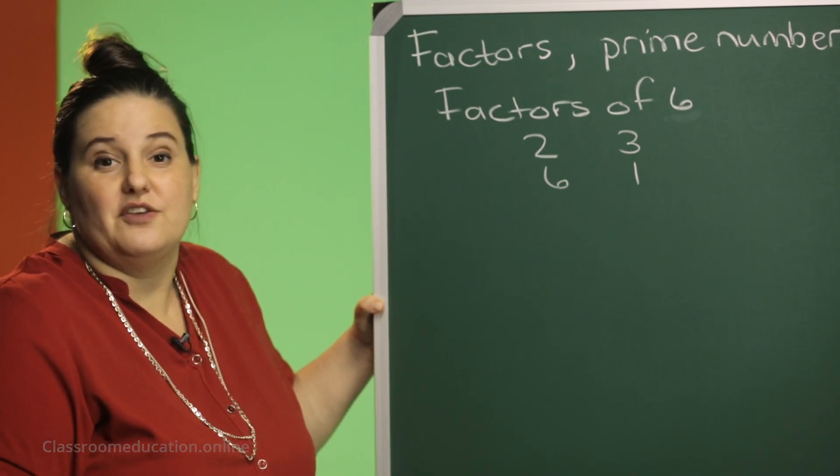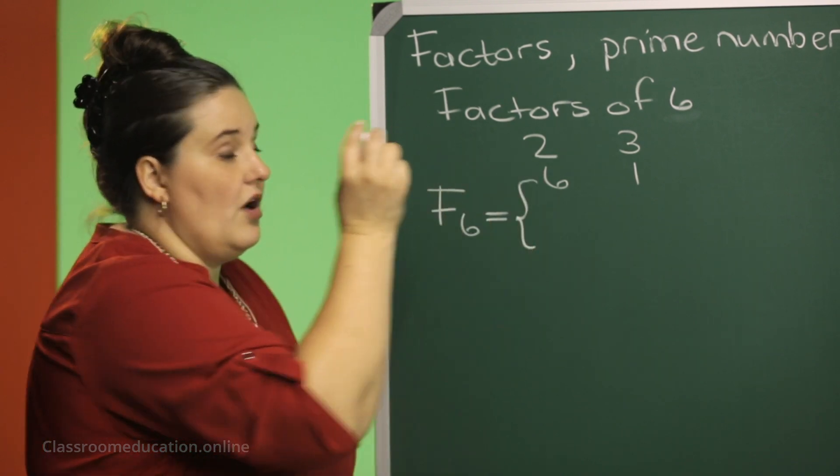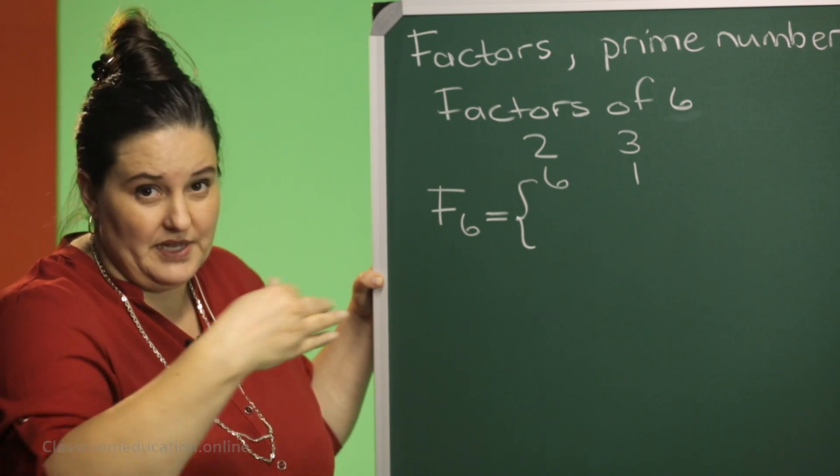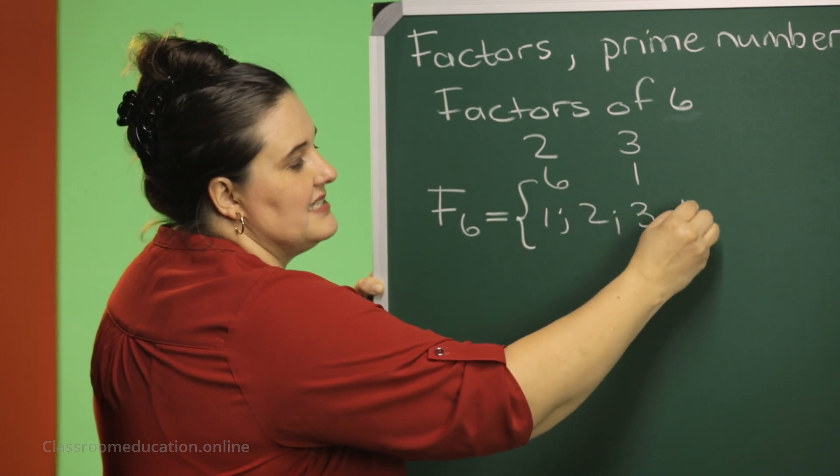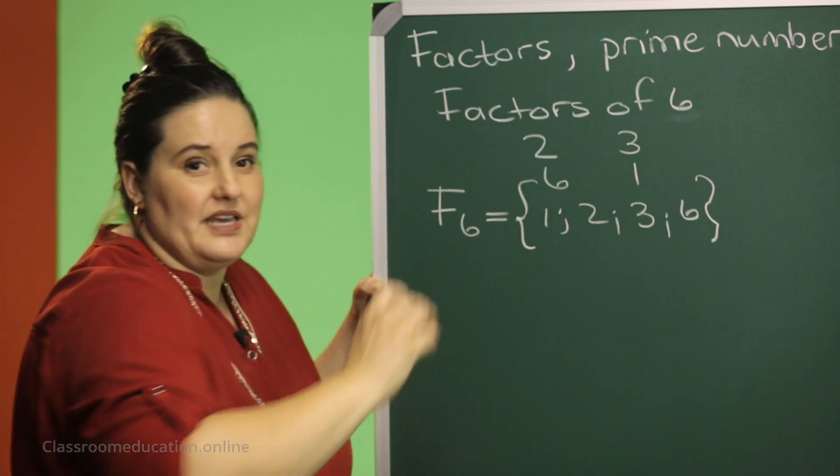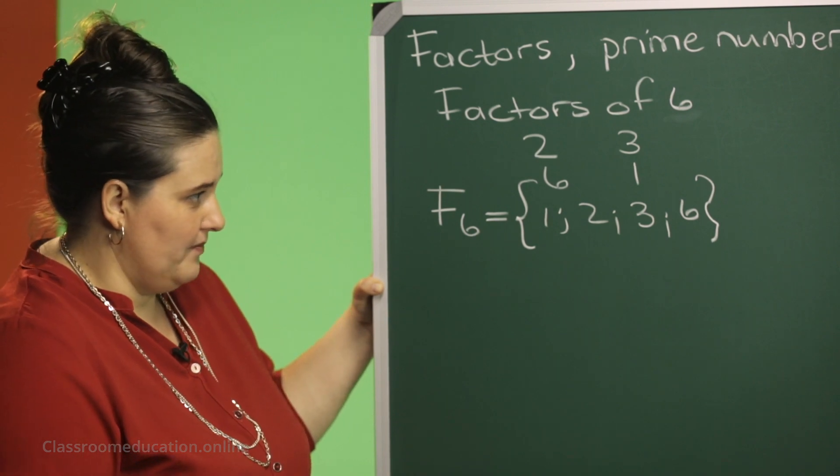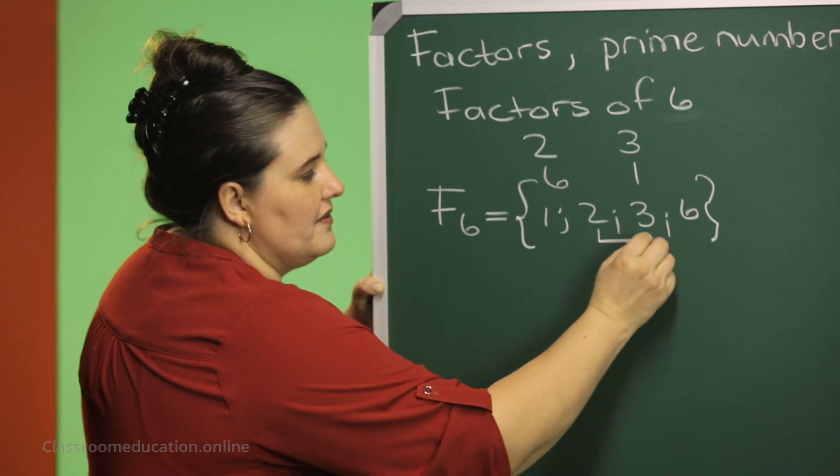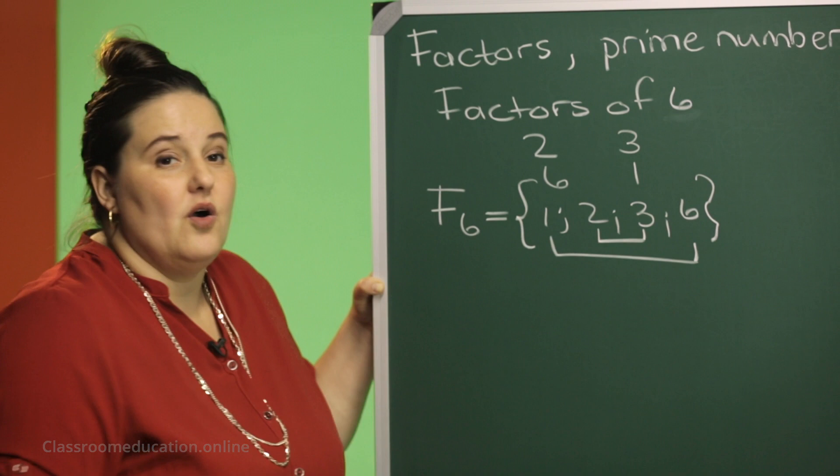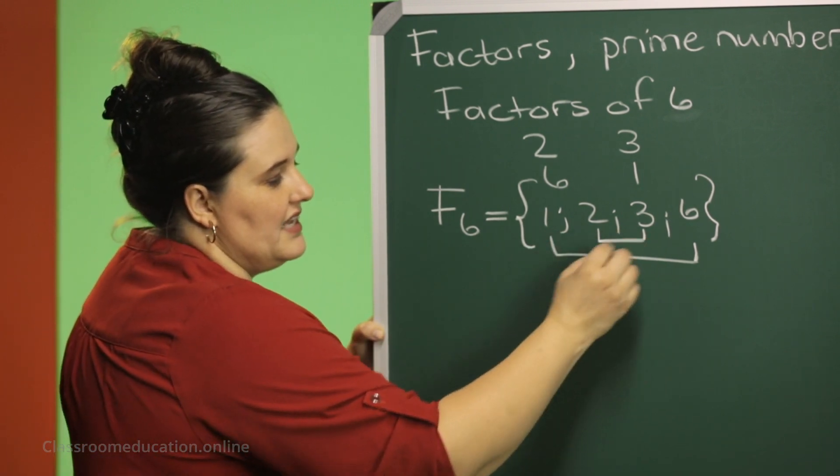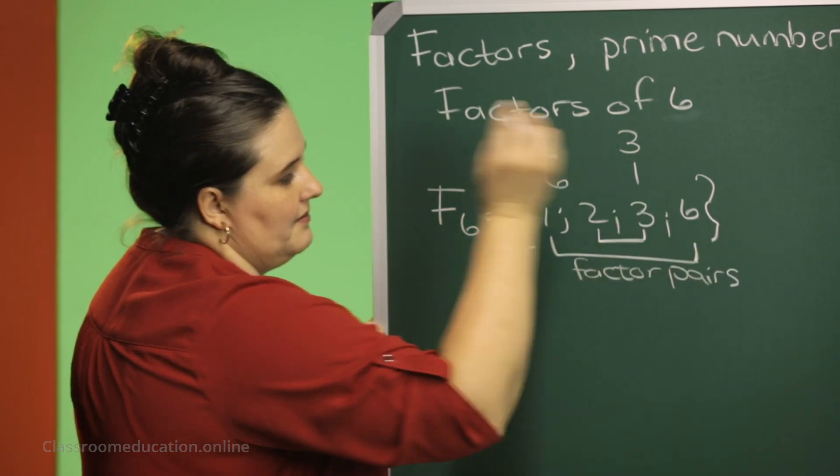So, if I'm asking you to give me the factors of 6, you can say the factors of 6 are, and I want it please from small to big, in ascending order, 1, 2, 3, and 6. And in this case, we don't put the 3 little dots there indicating that it carries on because it does not carry on. Now, interesting enough, the 2 and the 3, they are working as a pair. And the 1 and the 6 are also working as a pair. So, I have these as my factor pairs.